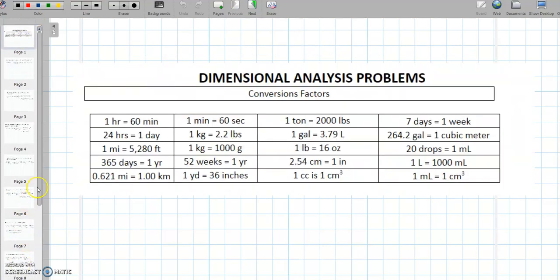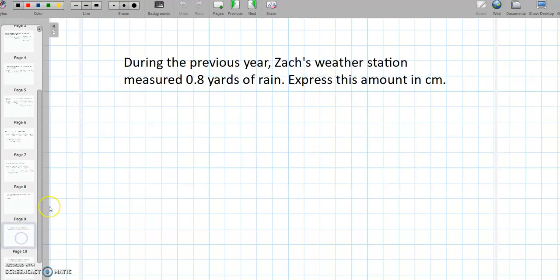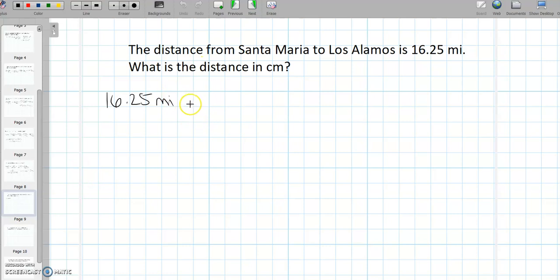0.621 miles. All right. 1 kilometer is 0.621 miles. All right, so that cancels out the miles for us and we are left with 16.25 divided by 0.621 kilometers. So that gives us, let's do the math. 16.25 divided by 0.621, that gives us 26.167 kilometers.